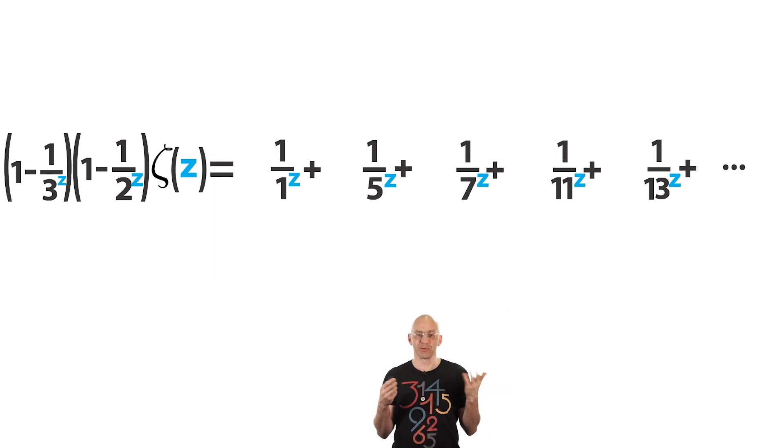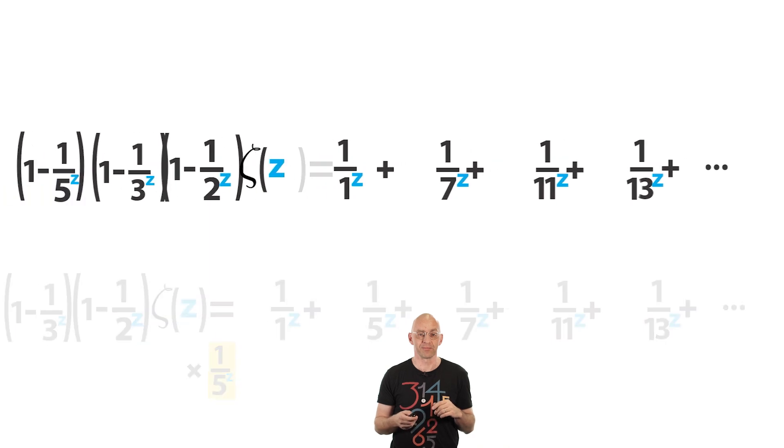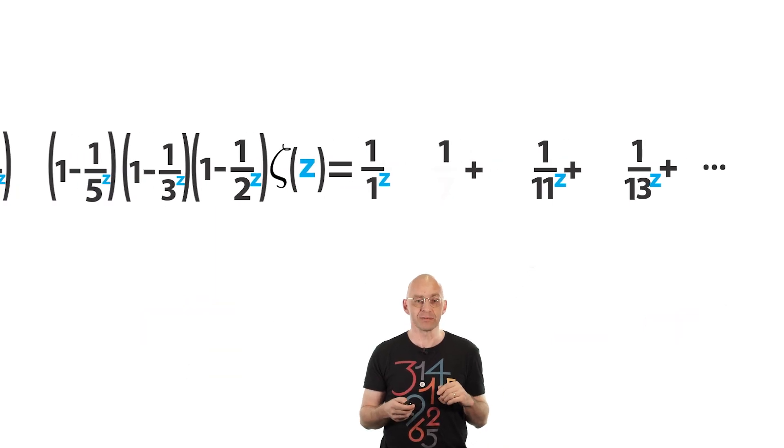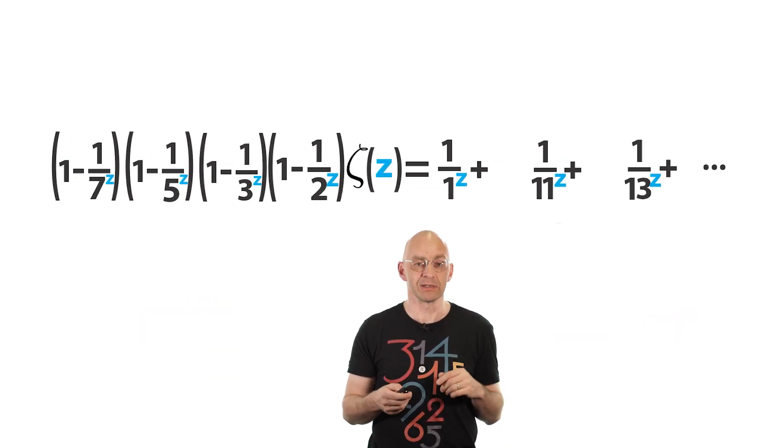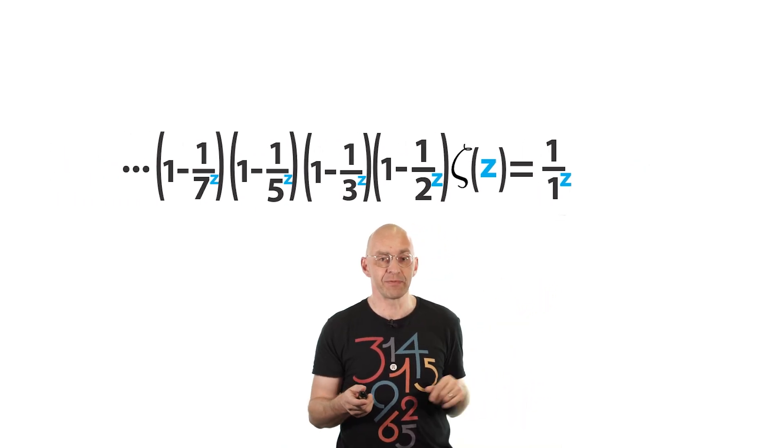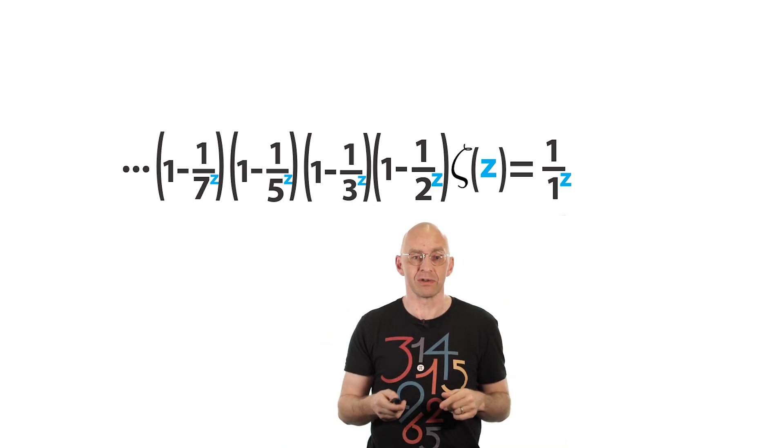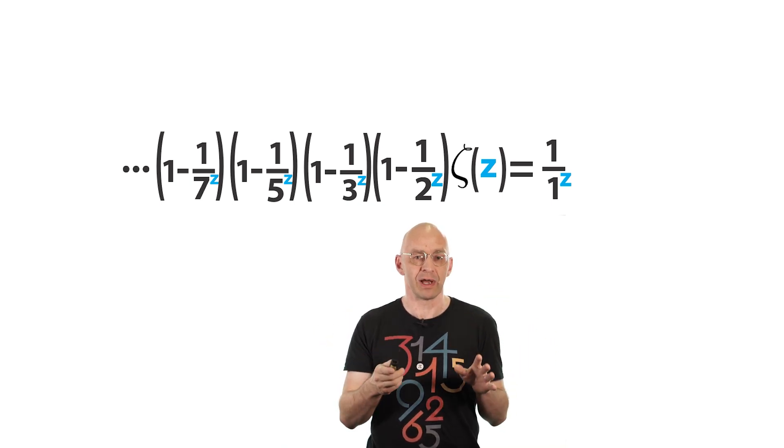Now, just rinse and repeat. So we make a copy times the second term on the right and subtract the bottom from the top which wipes out what? Well, all the terms with denominators divisible by 5 this time. And we just keep repeating this. And in the limit, we get this. So all the terms on the right, except for the first one, have been wiped out.